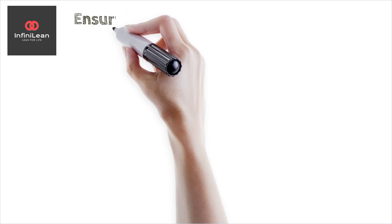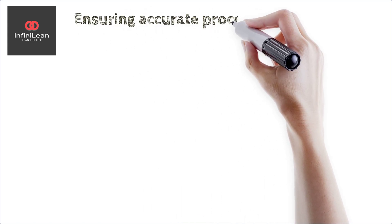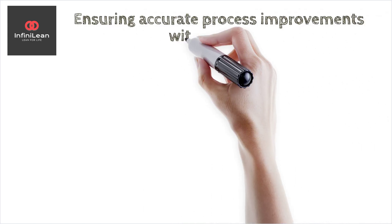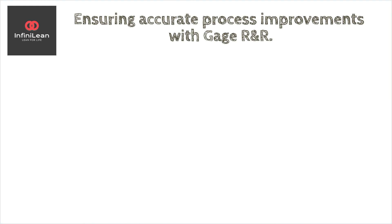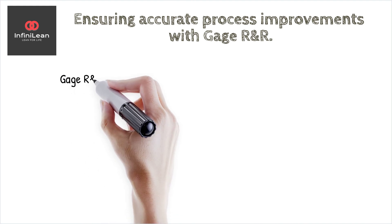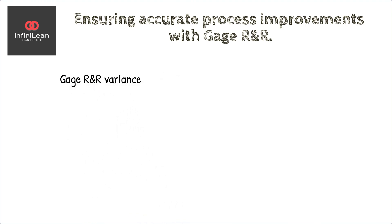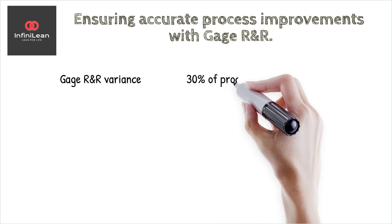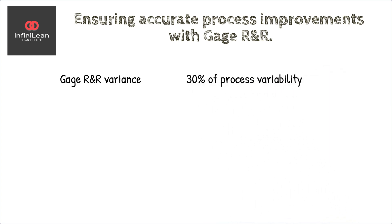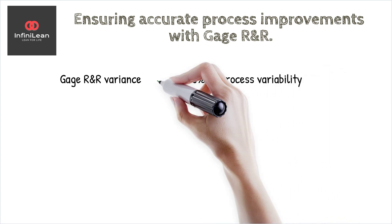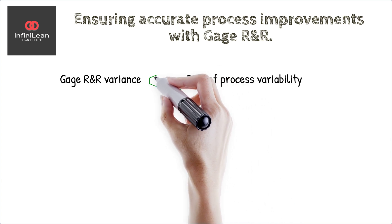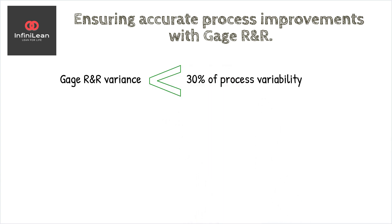A common rule is that the Gauge R&R variance should be less than 30% of the process variability. Anything higher might require improvements in the measurement system, such as better operator training, equipment calibration, or more precise measurement tools.